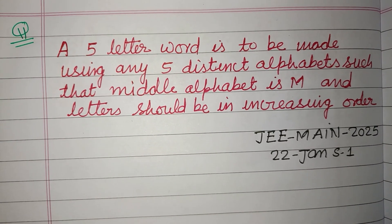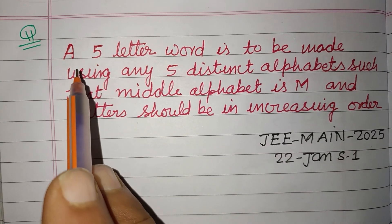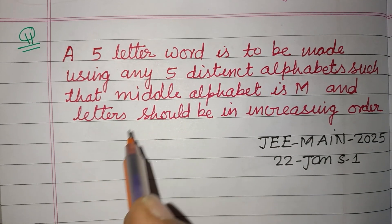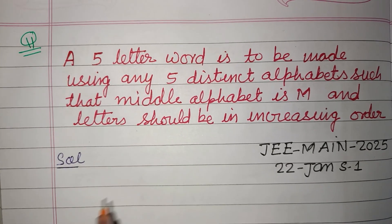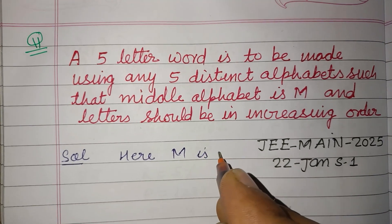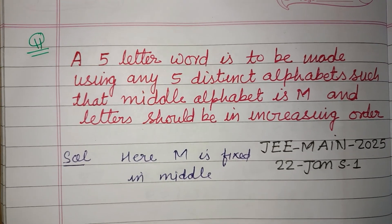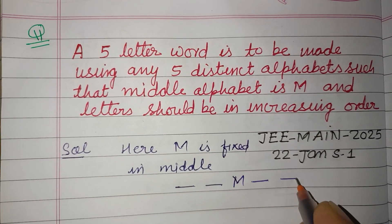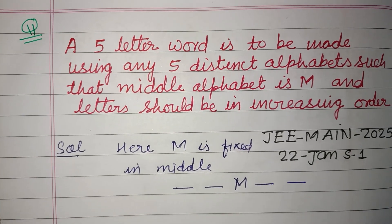Hello viewers, warm welcome to this YouTube channel. This question is from JEE Main 2025, 22nd January, Shift 1, from PNC. A five-letter word is to be made using any five distinct alphabets such that the middle alphabet is M and the letters should be in increasing order. So M is fixed in the middle — there are five letters: first, second, M in the middle, fourth, fifth — and letters should be in increasing order of alphabet.